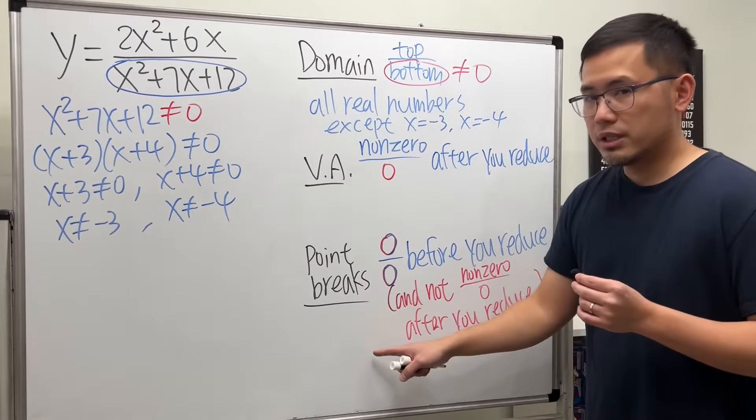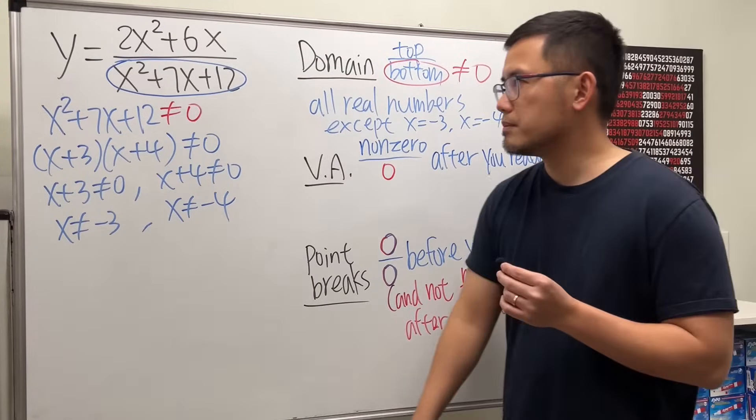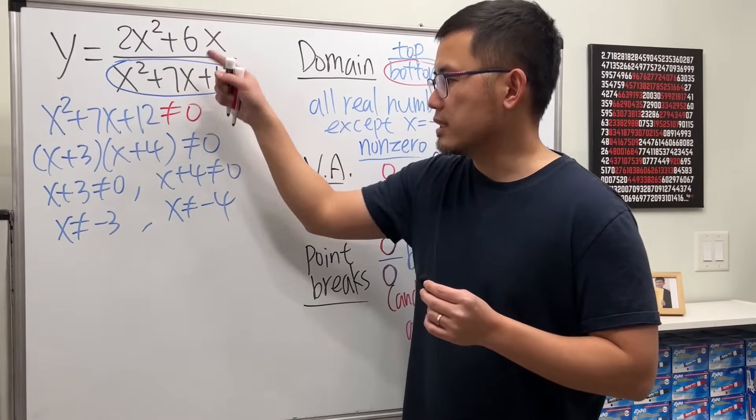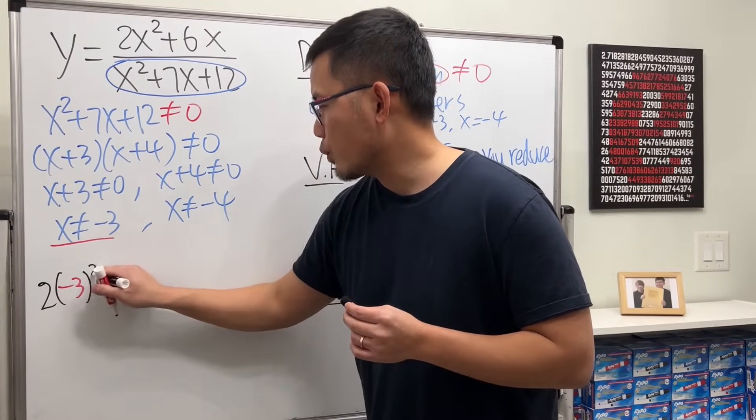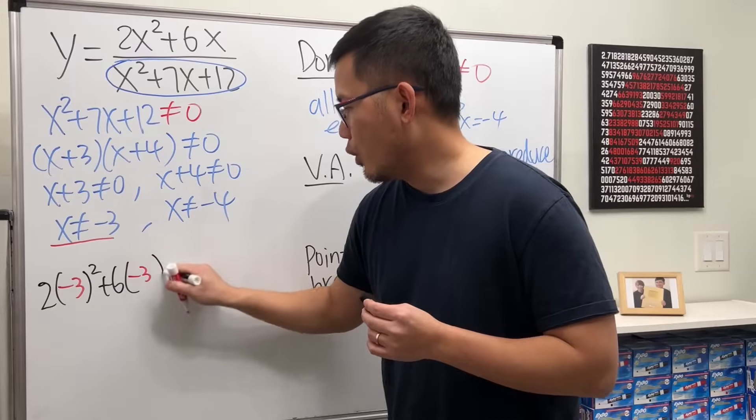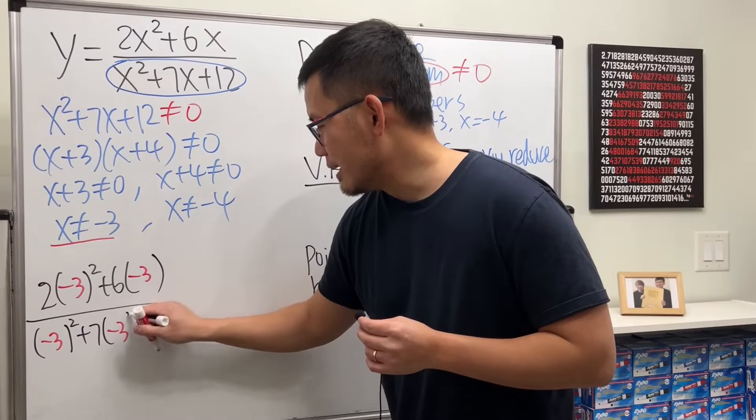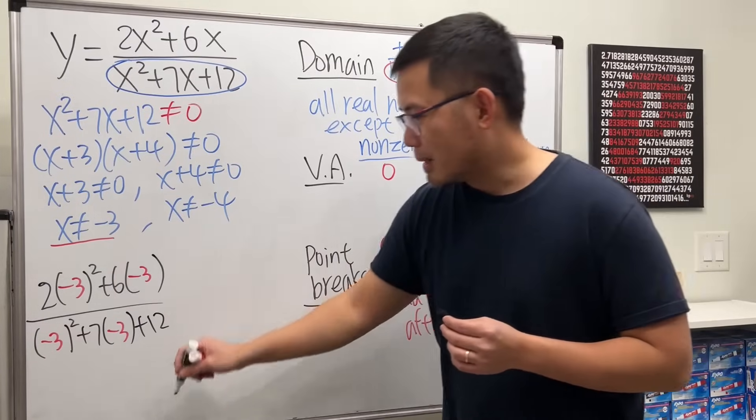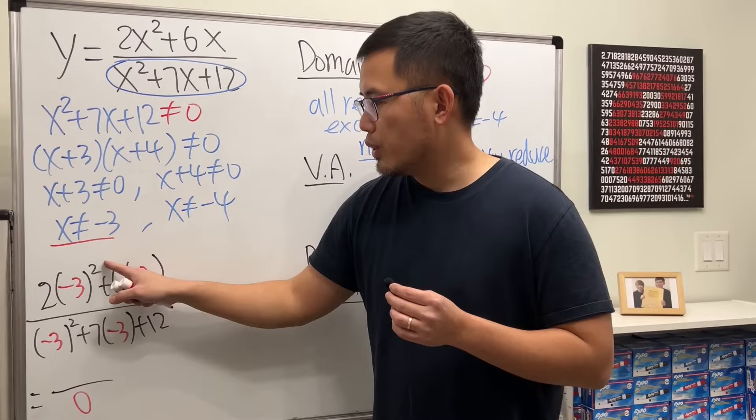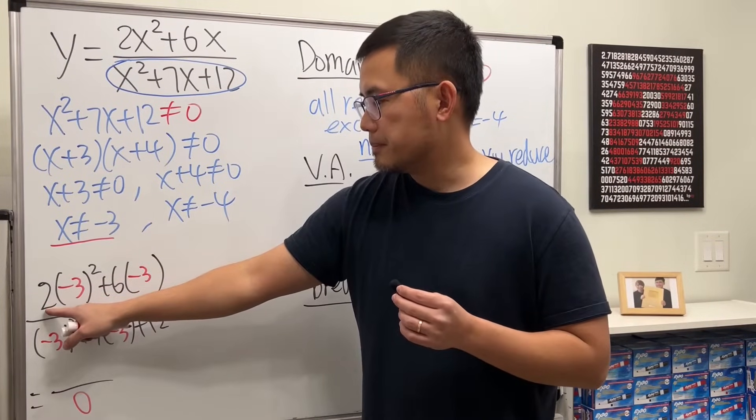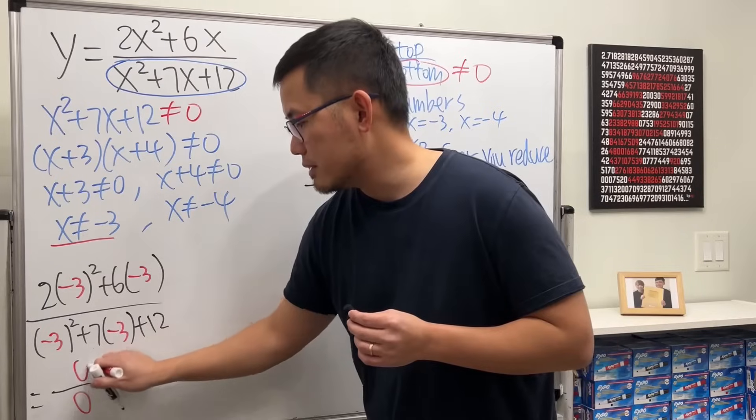Let's determine the point breaks first. We have to make sure we get zero over zero before we reduce. So if you put negative 3 into all the x's, you will get 2 times negative 3 squared plus 6 times negative 3 over negative 3 squared plus 7 times negative 3 plus 12. On the bottom, we know it's 0. On the top, 3 squared is 9, negative 3 squared is positive 9 times 2 is positive 18 and then this is minus 18. So we have 0 over 0. Good.